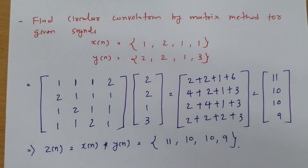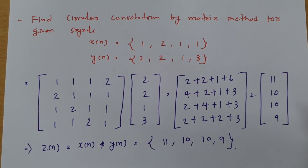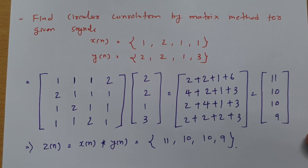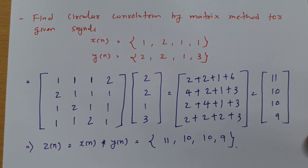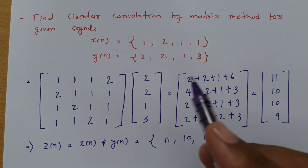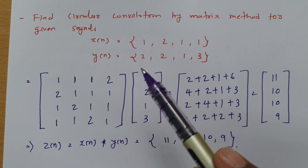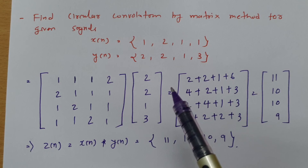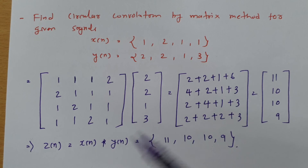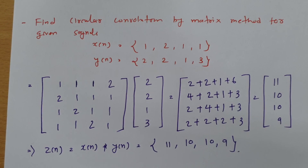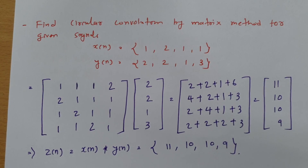So this is the circular convolution result — this matrix method is even easier. You can go with any method. As an assignment, solve the matrix method example by the previous method at home, and the previous method example by matrix method, then cross-verify whether the answers are the same — they should be. Please give your valuable suggestions, as they help me make better videos for students in the future. Thank you so much for watching.